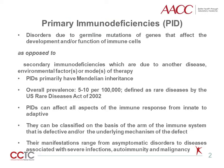My aim here is to provide a broad overview of primary T-cell immunodeficiencies and the laboratory approach to their diagnosis and potential treatment, with particular emphasis on severe combined immunodeficiency, SCID. Let's start by defining primary immunodeficiencies, abbreviated as PIDs. This group of diseases is due to germline mutations of genes that affect the development and or function of immune cells.